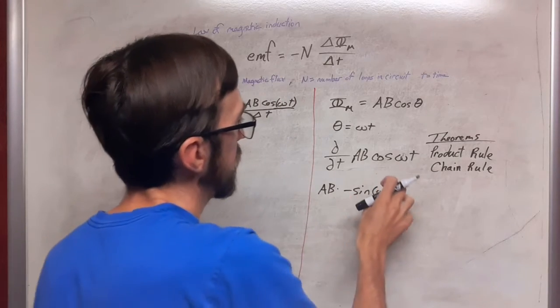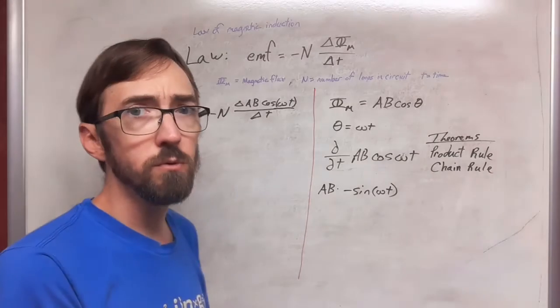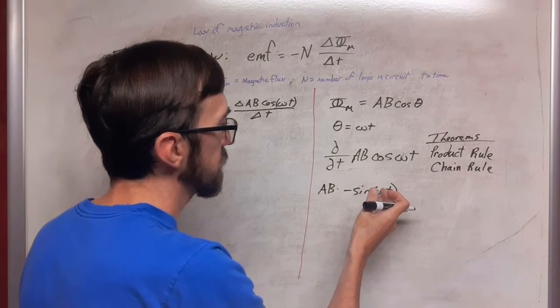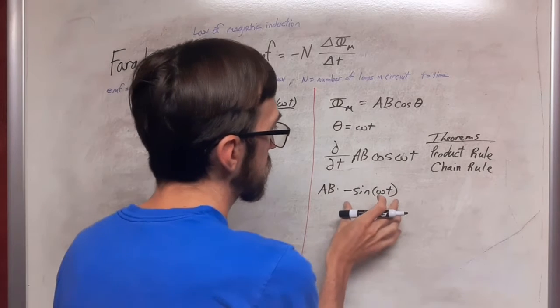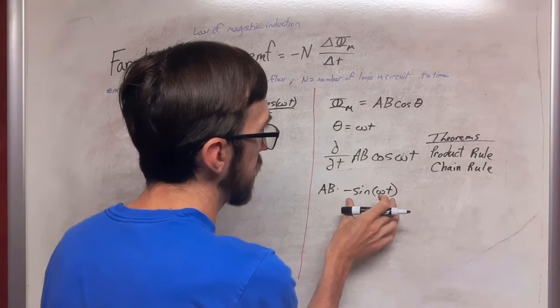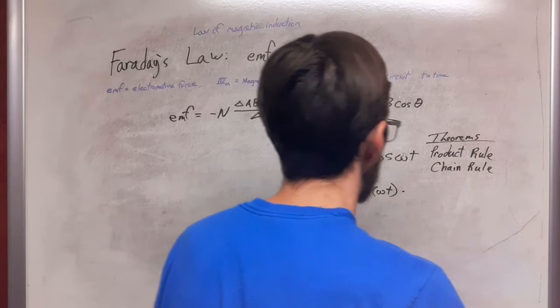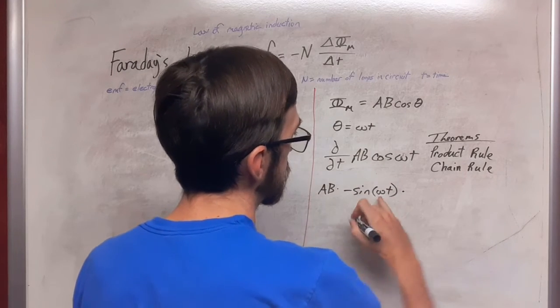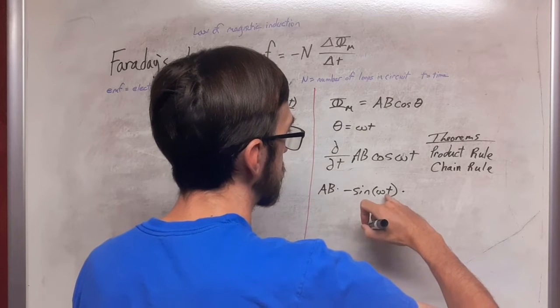But then we have omega t in here and that's where the chain rule comes in. So we have to take the derivative of omega t and that's going to multiply by the original function here. So the derivative of omega t is going to be the omega.